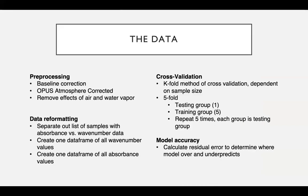The data is pre-processed on the FTIR machine using OPUS software, going through a baseline correction and an atmosphere correction that removes the effects of air and water vapor. Between each sample, a blank is run to account for atmospheric water vapor and carbon dioxide. Once the data is offloaded from the machine, we input it into R. I've written several R functions that read in the data and reformat it into a format that the PLS model expects. It's important to isolate the absorbance values, as those are what we input into the PLS model to predict percentages of BSI.